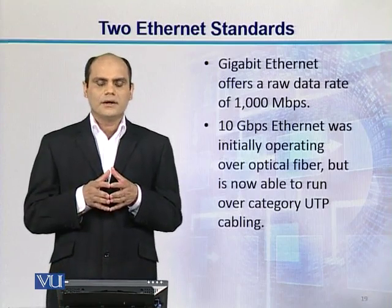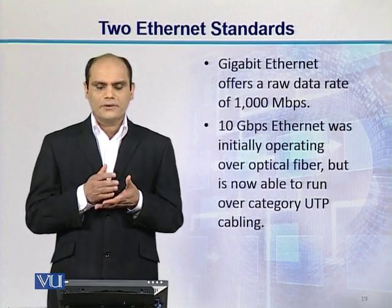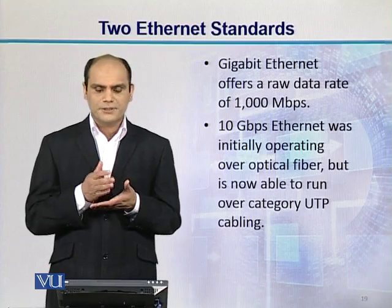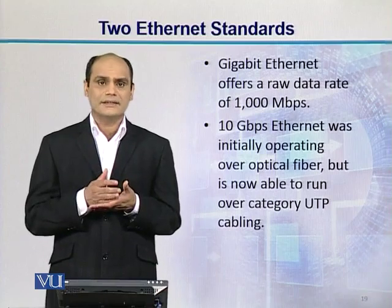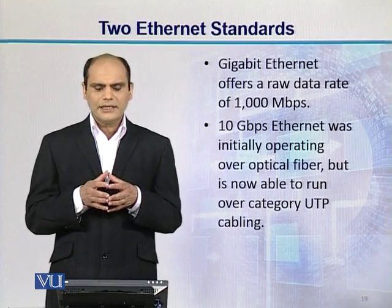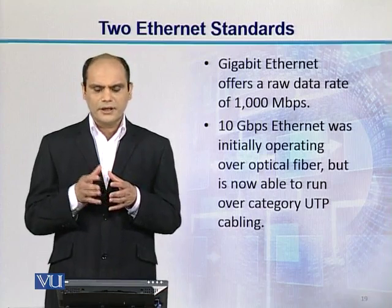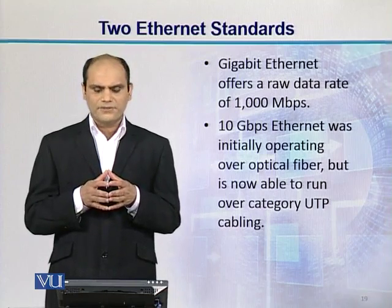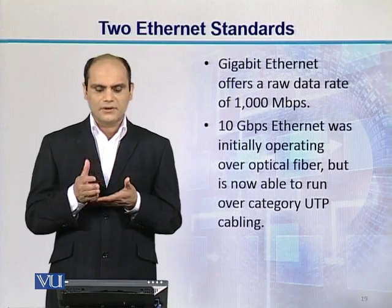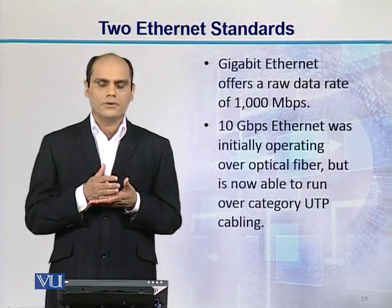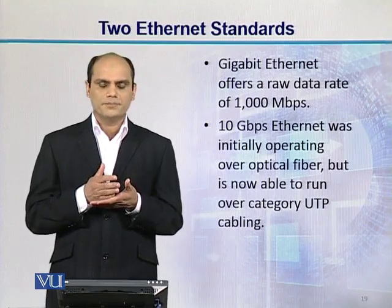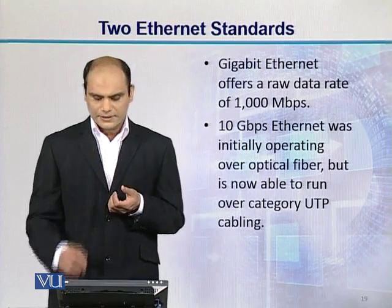Gigabit Ethernet offers a raw data rate of 1000 megabits per second. 10 Gigabit per second Ethernet was initially operating over optical fiber, but these days it is also available over unshielded twisted pair cabling.